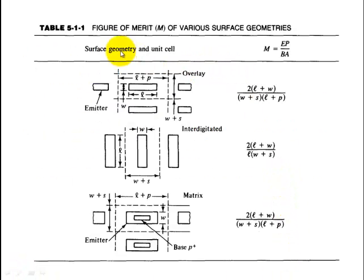Next is the figure of merit of various surface geometries. For the three geometries - interdigitated, overlay, and matrix - we calculate the figure of merit. The figure of merit M equals 2 into L plus W divided by the total area, where L is the length.